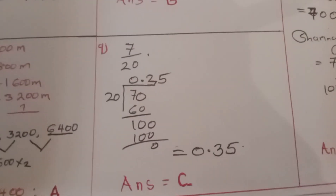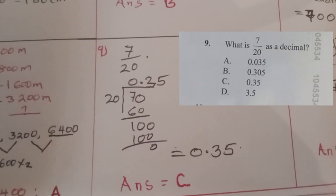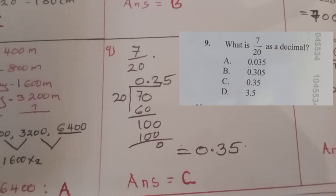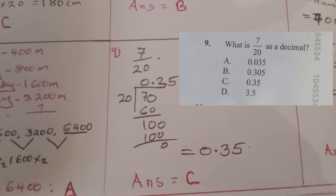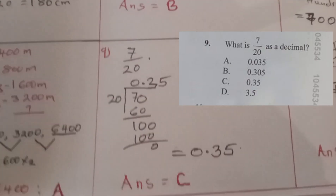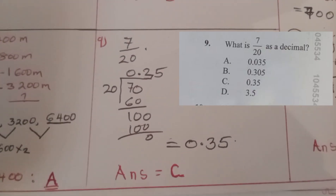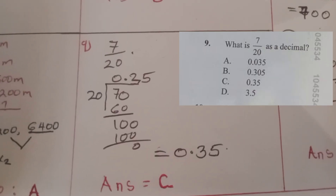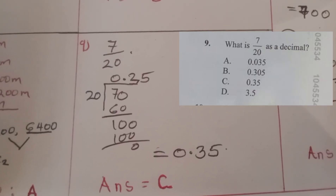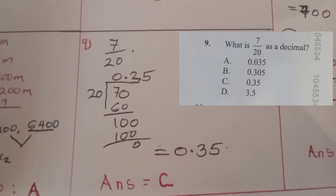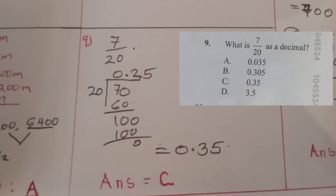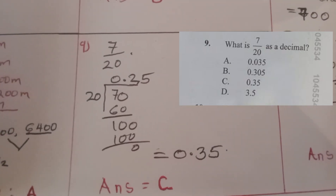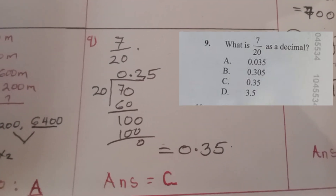Question nine: what is seven over twenty as a decimal? You carry out the division as displayed, and when you work it out you come up with 0.35. C was the correct answer.